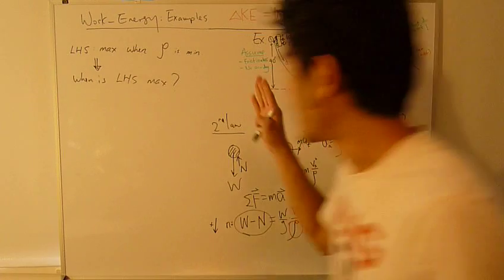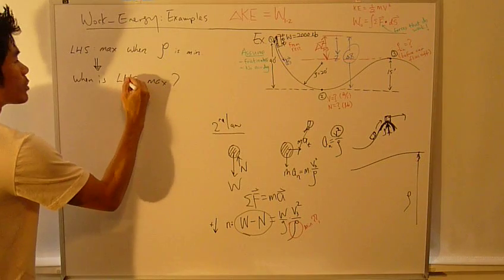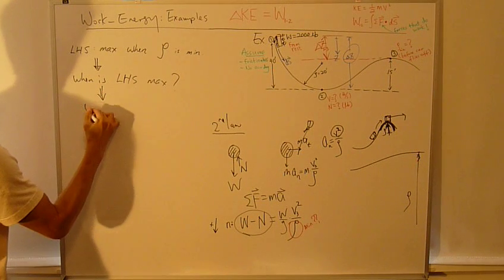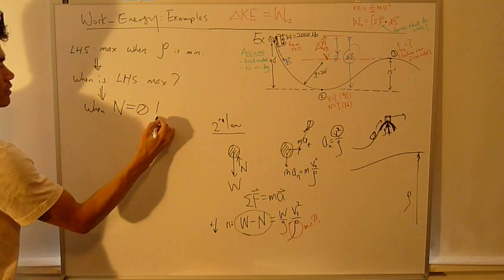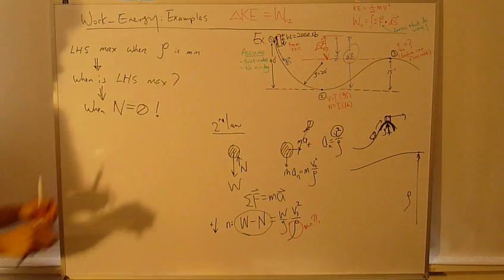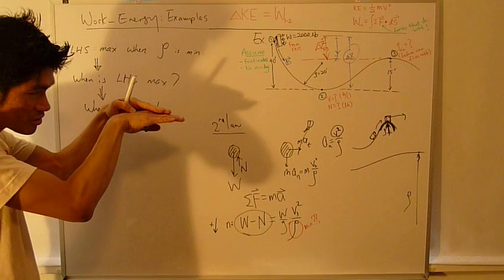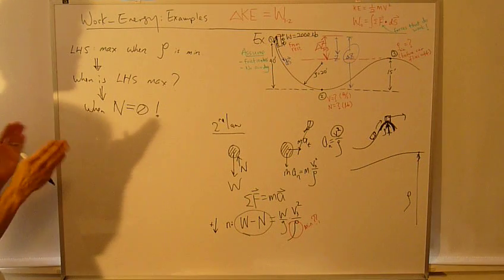That's the instance that we consider: when normal force is zero, when it just starts to fly off the track. Normal force is zero.